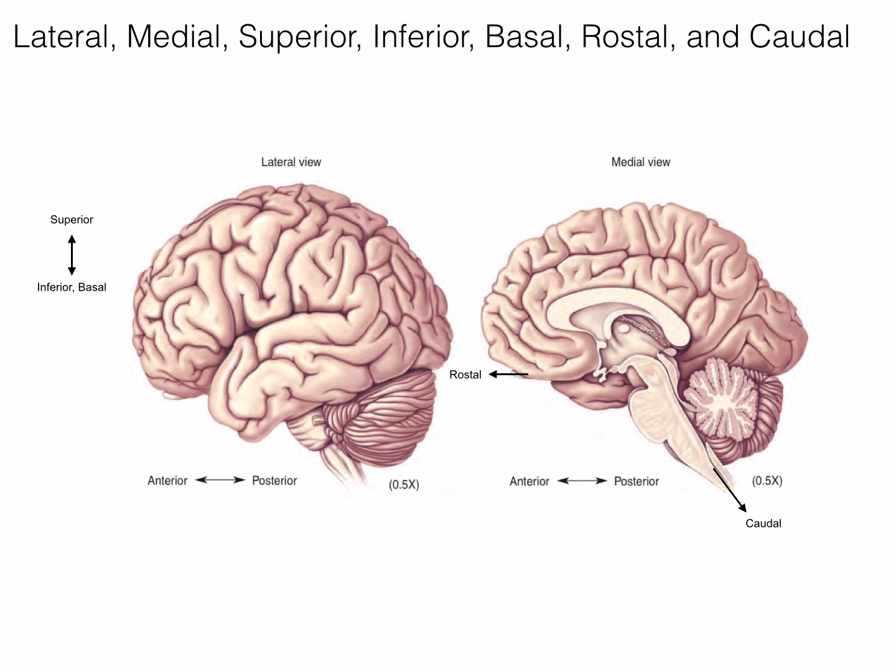Next we have lateral, medial, superior, inferior, basal, rostral, and caudal. Lateral and medial are pretty straightforward. Lateral structures are toward the outer surfaces of the brain on the left and right, and medial structures are toward the middle, or midline.